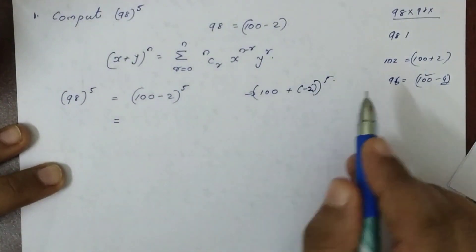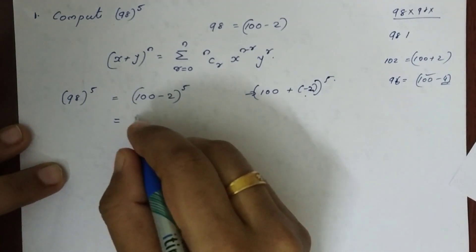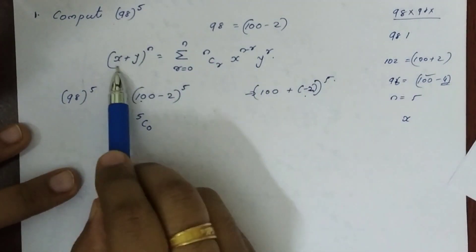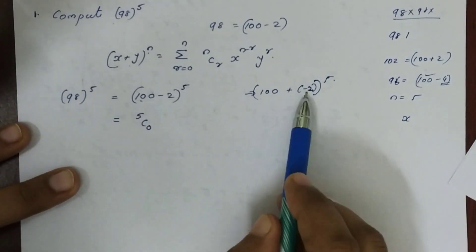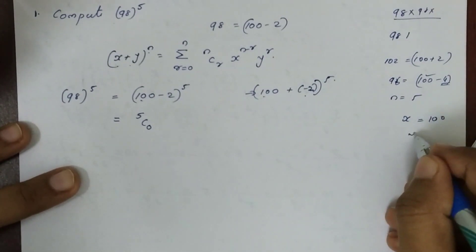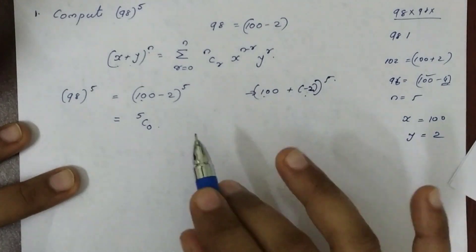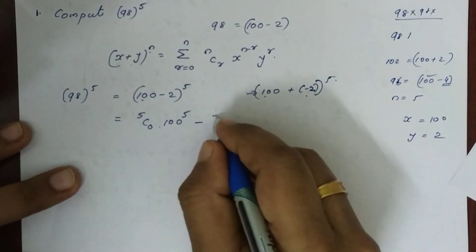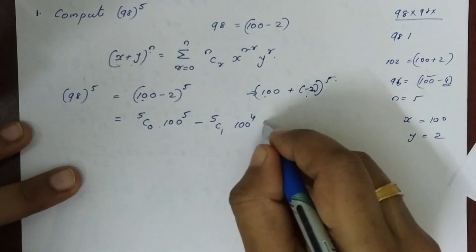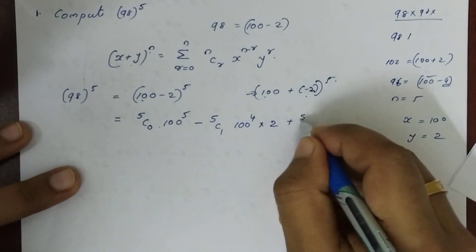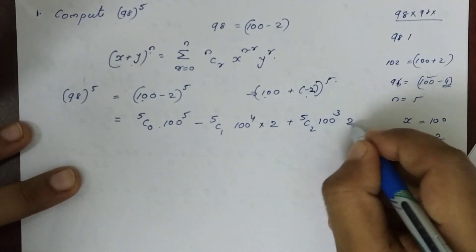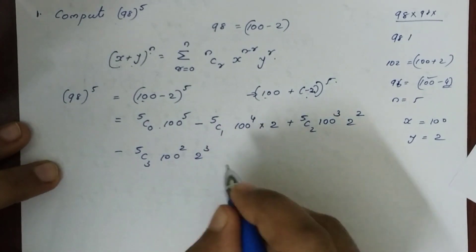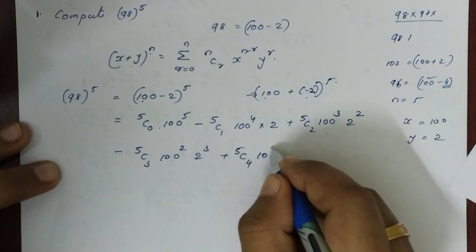Expanding (100 minus 2) raised to 5: equals 5C0 times 100 raised to 5, minus 5C1 times 100 raised to 4 times 2 raised to 1, plus 5C2 times 100 raised to 3 times 2 raised to 2, minus 5C3 times 100 squared times 2 raised to 3, plus 5C4 times 100 raised to 1 times 2 raised to 4, minus 5C5 times 100 raised to 0 times 2 raised to 5.